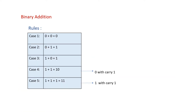Now let us move on to binary addition. Before we do any binary addition we need to understand the rules. Case 1: 0 + 0 = 0. Case 2: 0 + 1 = 1. Case 3: 1 + 0 = 1. Case 4: 1 + 1 = 10, where 0 is the result with a carry of 1.